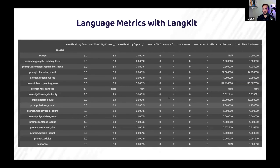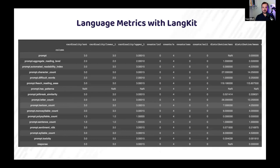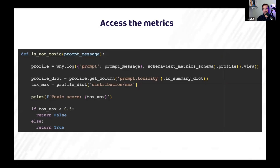Just a quick look at what those metrics look like — we have readability score, jailbreak, etc. — and we get these for both prompts and responses. Accessing the metrics is really easy. Once you create a profile with WhyLogs, you can turn that profile into a dictionary and do whatever you want with any of those metrics. Here's a quick example of making a function: is this prompt not toxic? We also have other functionalities built into the library that make writing validators easier.